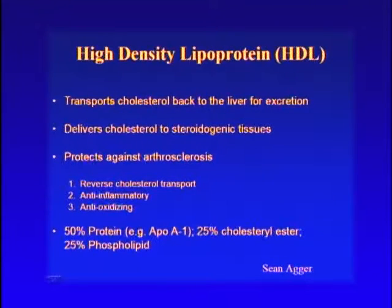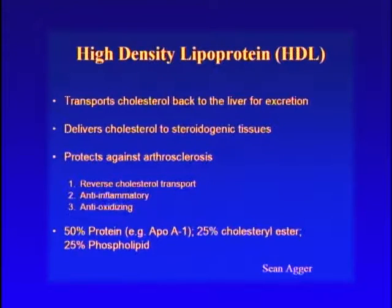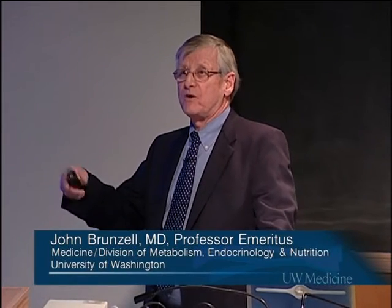The other lipoprotein of importance is high-density lipoprotein — HDL. HDL transports cholesterol back to the liver for excretion. ApoB particles deliver cholesterol to the periphery; HDL brings it back, allowing cholesterol to enter the biliary tract for excretion. It also delivers cholesterol to steroidogenic tissues like the gonads and adrenal glands. It protects against atherosclerosis hypothetically through reverse cholesterol transport, anti-inflammatory effects in the arterial wall, and antioxidizing effects of the proteins carried on HDL. HDL is about 50% protein, 25% cholesterol ester, and 25% phospholipid, though composition varies among particle sizes.